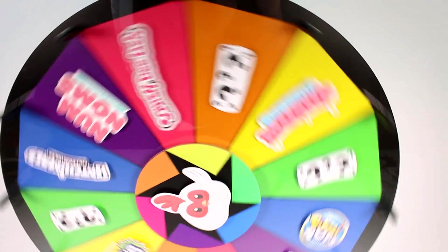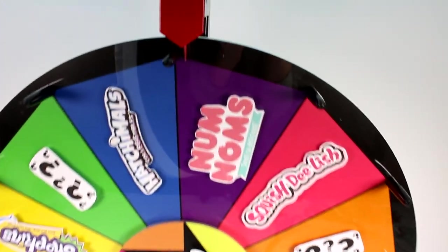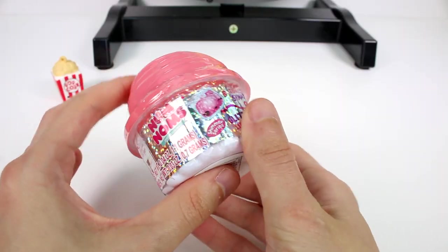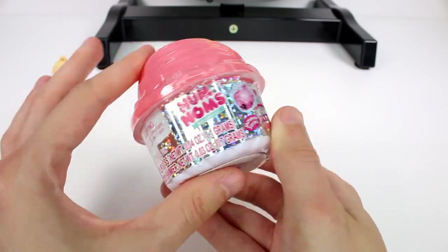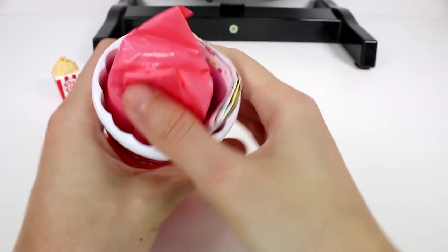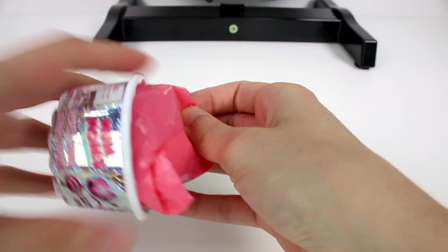Let's find out what our next one's going to be. It's going to be a Num Noms. Let's go ahead and open one of those. We are going to be opening up one of the Shimmer Series Num Noms. Let's grab our checklist out.